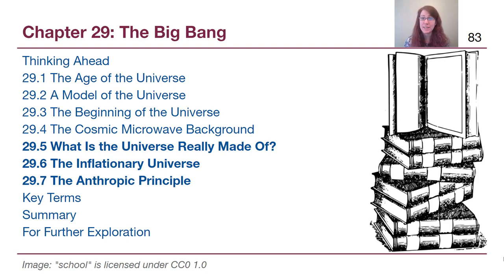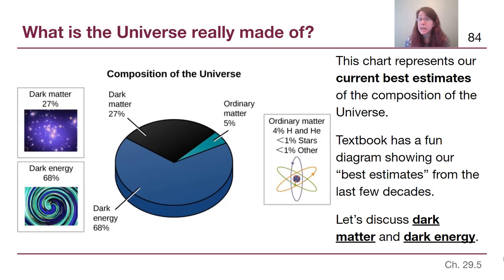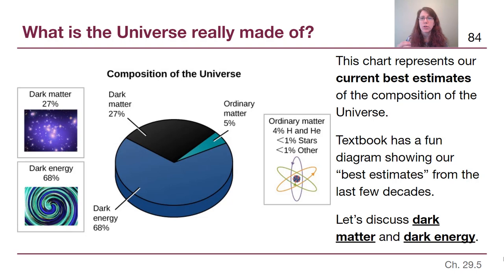Welcome back to chapter 29 in module 6. In this last video for the chapter, we're going to touch on very briefly some of the much more difficult topics of cosmology. We want to think about what the universe is really made out of. Space has what's called curvature, which tells us about how much stuff there is and the density, but we're not going to focus on that. What we are going to focus on is the breakdown of what's there once we've decided the density of the universe.